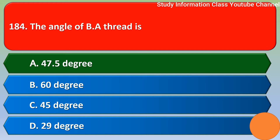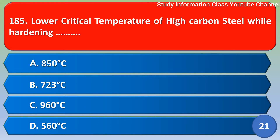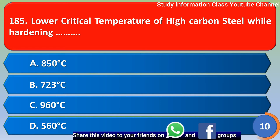Next question: the lower critical temperature of high carbon steel while annealing — option A 850 degrees Celsius, option B 723 degrees Celsius, option C 960 degrees Celsius. The correct answer is option B — 723 degrees Celsius.